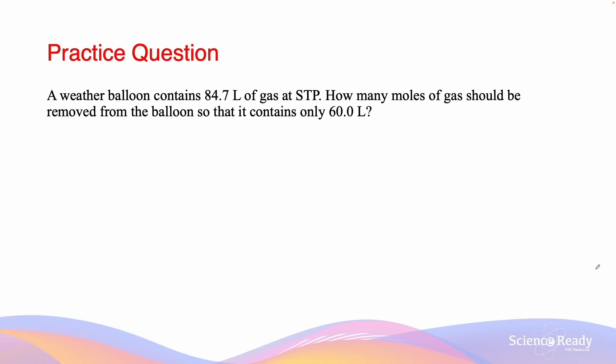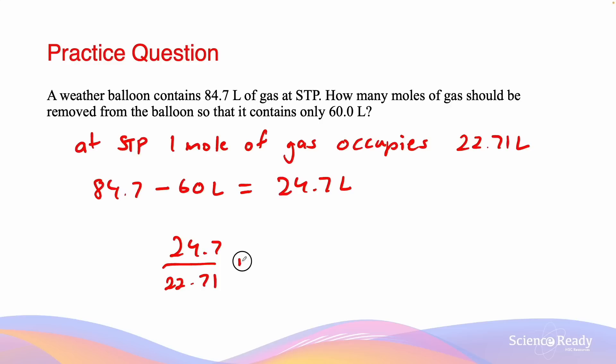This next question reads, a weather balloon contains 84.7 liters of gas at standard temperature and pressure. How many moles of gas should be removed from the balloon so that it contains only 60 liters? So now on the NESA data sheet, at STP, 1 mole of gas occupies 22.71 liters. So if we are going from 84.7 liters to 60 liters, we have to decrease a total of 24.7 liters of space. The number of moles which this 24.7 liters is equivalent to is equal to 24.7 divided by 22.71 moles, which equals to 1.09 moles, and that is in three significant figures.